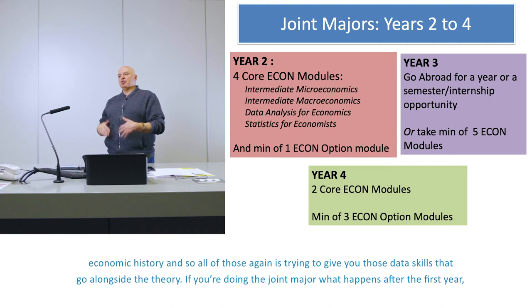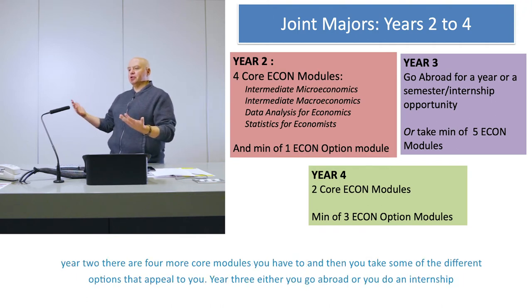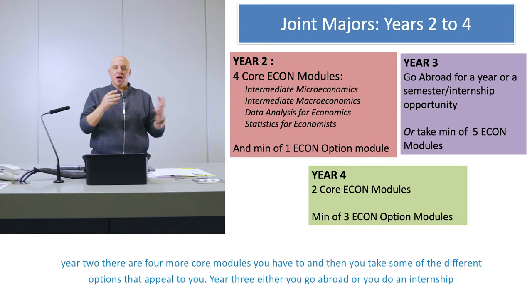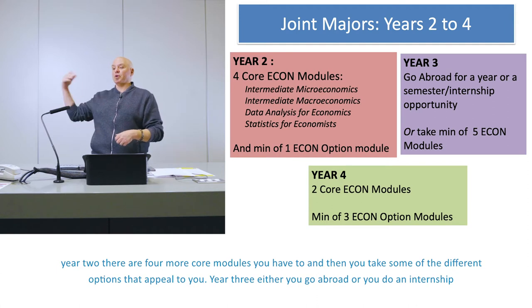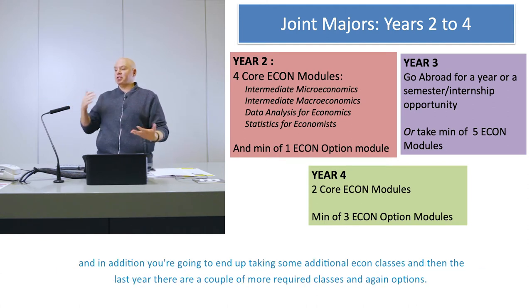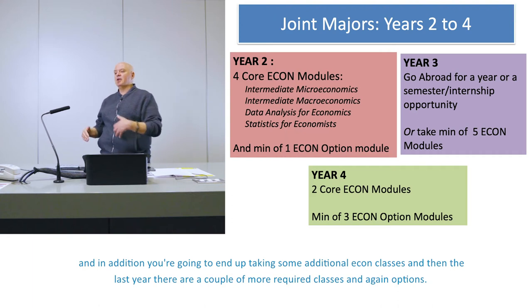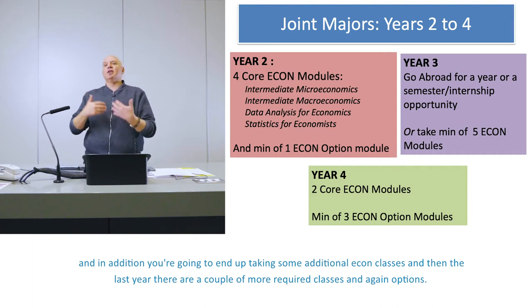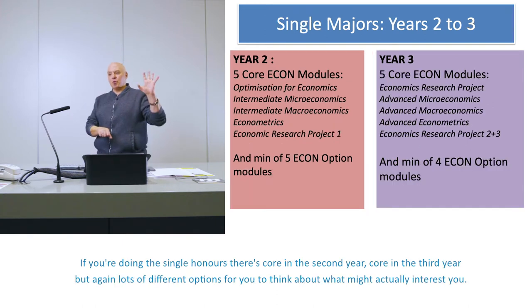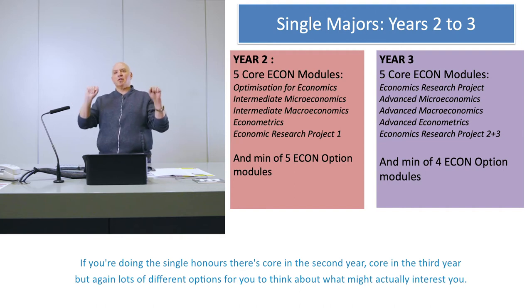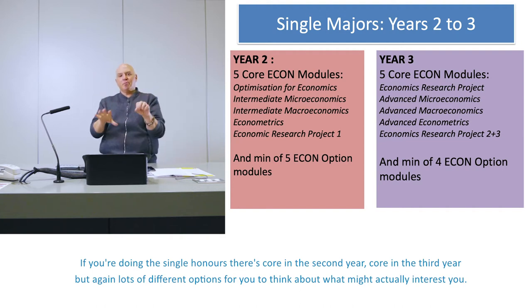If you're doing the joint major, in year two there are four more core modules plus different options that appeal to you. In year three, either you go abroad or do an internship, along with some additional economics classes. In the final year, there are a couple more required classes and again options. For the single honors, there's core in second year and core in third year, with lots of different options to think about what interests you.